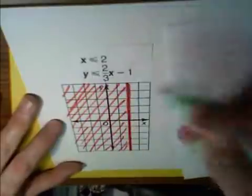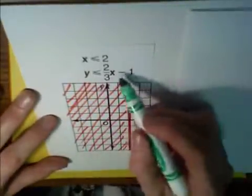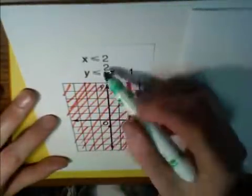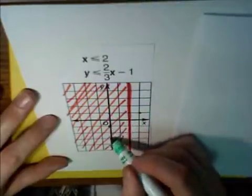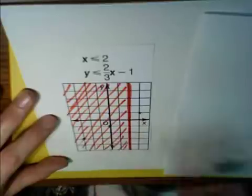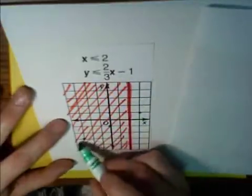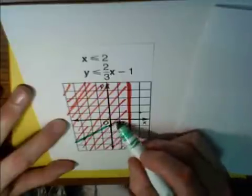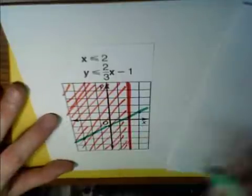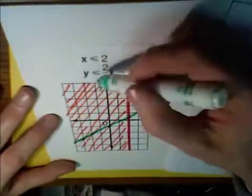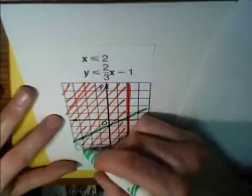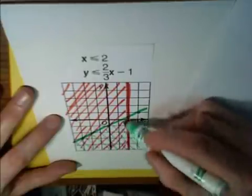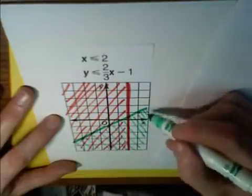Next, we're going to graph the second inequality. My y-intercept is negative 1. My slope is 2 thirds. Rise 2, run 3. And then going backwards, rise negative 2, run negative 3. And there's an equal to sign, so we're going to have a solid line. And now where do I shade? It says y is less than the line we graphed. So I'm going to shade below.